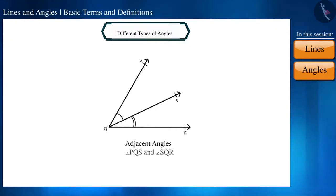As you can see, in the figure the vertex Q of both the angles is the same for angle PQS and angle SQR and the arm QS is the common arm and both these sides PQ and QR are in the opposite direction of the arm QS. That is why we can say that angle PQS and angle SQR are adjacent angles.